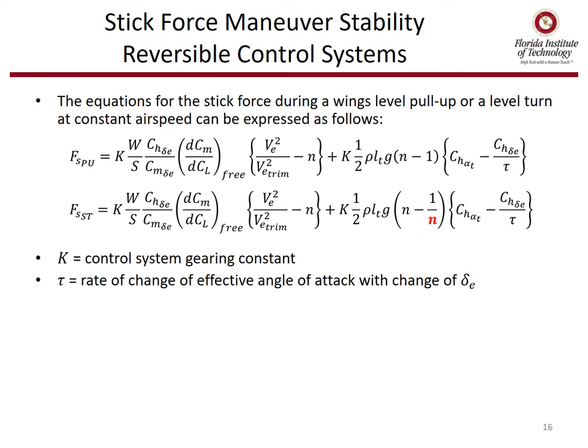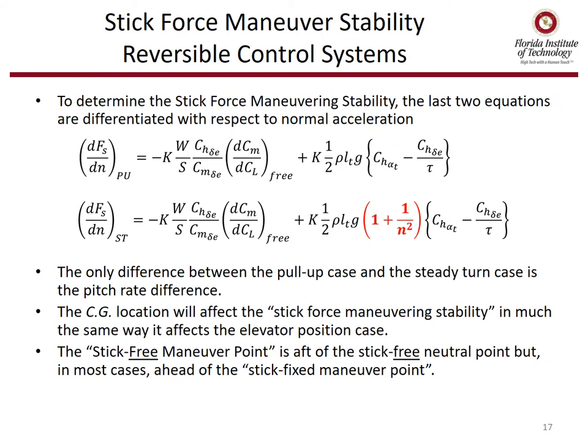Here are the equations for stick force during a wings-level pull-up or a level turn at constant airspeed. Upon inspection, they are very similar — the only difference is what multiplies the second term, the damping term. In the case of a steady pull-up, we have n minus 1; in the case of a steady turn, we have n minus 1 over n. K is a control system gearing constant, and tau is the rate of change of effective angle of attack with change of elevator position. To determine stick force maneuvering stability, these equations are differentiated with respect to normal acceleration. Again, the only difference between the pull-up and steady turn cases is what multiplies the pitch damping term — there's no load factor in the pull-up, but there's a 1 plus 1 over n squared in the steady turn.